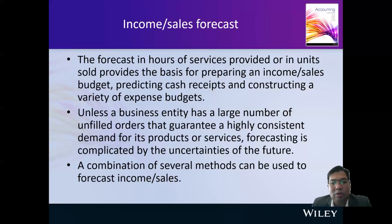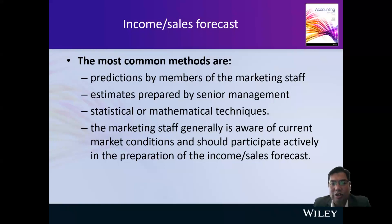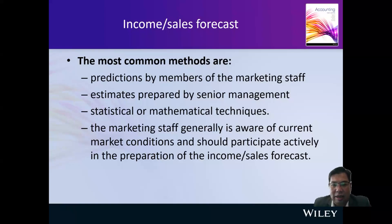A combination of several methods can be used to forecast sales. Number one is predictions made by the marketing staff. Number two is by senior management. Number three is by using mathematical or statistical techniques or formulas. Normally the best person to know about it is the marketing staff, because they are very close to the customer and the market — they know the changes in demand and can see the trend in sales.